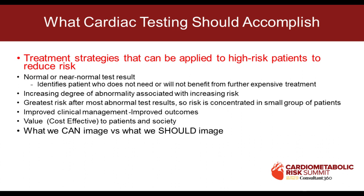We'll know a lot more in a month when the ischemia study comes out. A near-normal or normal test result identifies somebody who doesn't need a lot more expensive treatment and shouldn't get more expensive testing. Increasing degree of abnormality is associated with increased risk, so when you get to the highest-risk population, offering advanced treatment is reasonable. We've got to have real-world outcomes data, it's got to be cost-effective, and we need to distinguish because we can image versus whether we should image.